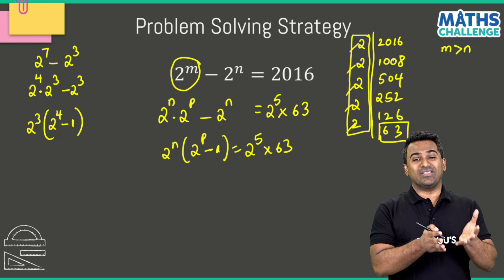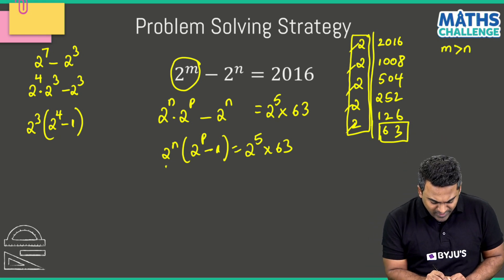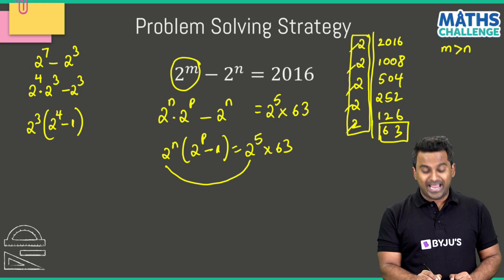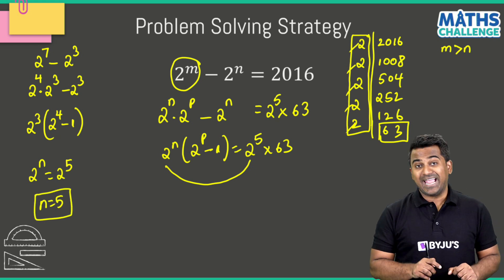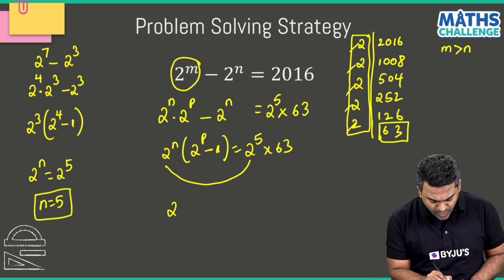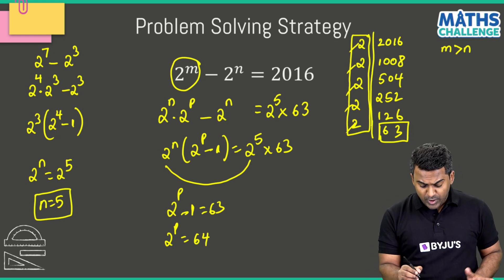Now I can compare the terms on the left hand side and the right hand side. It could be the case that 2^n equals 2^5, so I've found my n value as 5. Now comes the p value. When I equate 2^p - 1 as 63, 2^p becomes equal to 64.